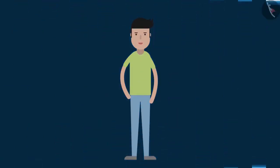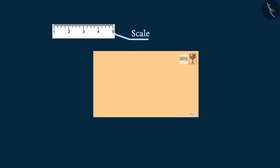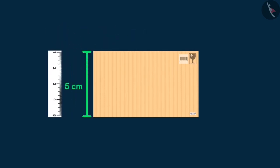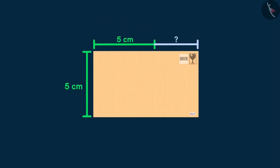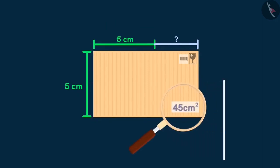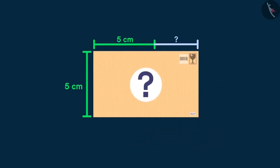Consider this situation. Raghu gets a rectangular shaped parcel from the delivery man. He wants to measure the parcel to guess the contents of the parcel. He has a 5 cm long scale that he uses to measure the parcel. He finds that the width of the parcel is exactly 5 cm but the length is somewhat longer than 5 cm. His ruler falls short while measuring the length. He also notices that the area of the rectangular shaped parcel has been measured to be 45 cm². Can you help Raghu find the length of the parcel?